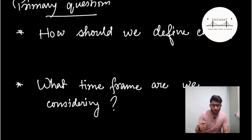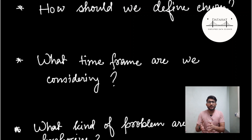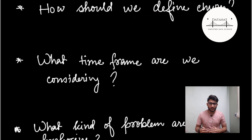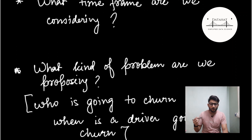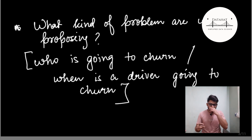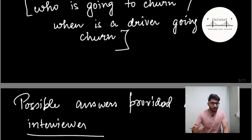Some of the primary questions to ask here are: how should we define churn? What timeframe are we considering — one month, six months, the next week, or the next few hours? And what kind of problem are we proposing — are we determining who is going to churn in the timeframe, or which drivers are likely to churn? How you define the problem statement will make a difference in your approach. Ask these clarifying questions, then consider some probable answers the interviewer might provide.